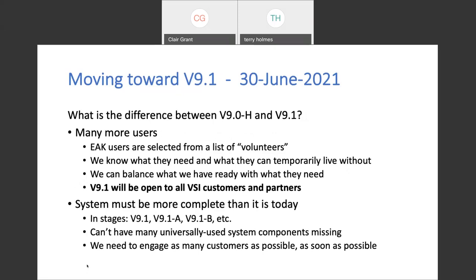Moving towards 9.1 — this is my 'what's in a name' slide, and in this case there is a big difference. 9.0 A through H is a small, very directed set of customers. 9.1 will be open to all VSI customers and partners. The EAK resulted from a questionnaire — close to 80 or more filled out. These were volunteers who knew what they were volunteering for. We knew what they needed in terms of compilers, layered products, and networks, and also what they could live without for a while.